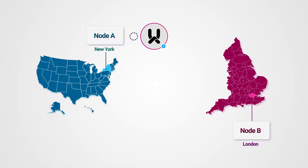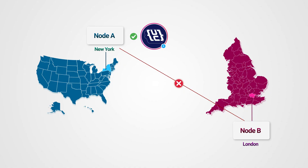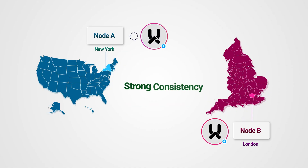If you prioritize consistency during a network partition, both nodes will reject any write request. They'd rather give an error than risk having inconsistent data across the entire system. This is done to have strong consistency. If Node A accepts your profile picture update but can't tell Node B about it, then Node B still has your old profile picture — that's inconsistent data. So a strong consistency-focused system would say, 'Sorry, I can't process your update right now because I can't guarantee that everyone will see the same result.'